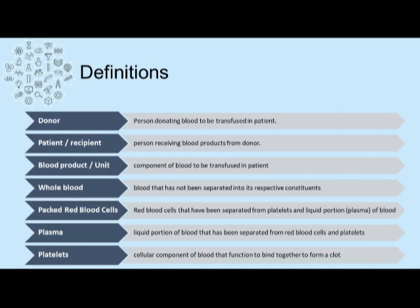The patient or recipient is the person receiving blood products from the donor. One such blood product is whole blood that has not been separated into its respective constituents. Another type of blood product are packed red blood cells that have been separated from the platelets and the liquid portion or plasma of the blood. The plasma or liquid portion of the blood has been separated from the cellular components, including red cells and platelets. And the last component commonly seen in blood banks are platelets, which are the cellular component of blood that function to bind together to form a clot.